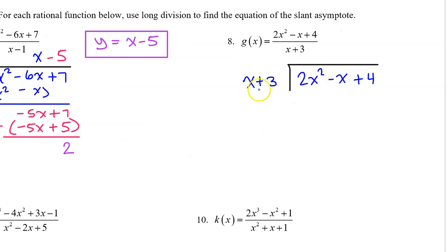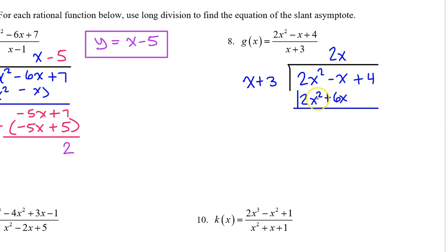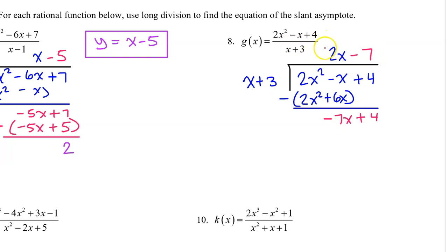Number eight: two x squared divided by x is two x. Now multiply two x times x plus three: two x times x is two x squared, and two x times three is six x. Subtract — these cancel. Negative x minus six x is negative seven x. Bring down the four, then divide negative seven x by x and that leaves negative seven. Right there, the slant asymptote is y equals two x minus seven.